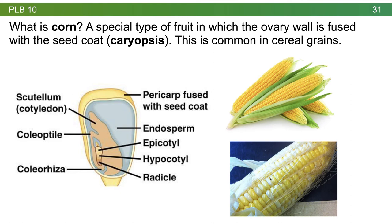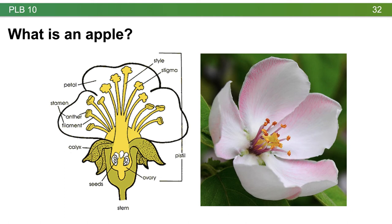Consider an apple: you have that hard skin on the outside, then fleshy fruit on the inside, and several seeds. You have a diagram of an apple flower and an actual picture of the apple flower. Notice where the seeds are in relation to the rest of the flower — think about what kind of fruit this could be of the different fruit types we've talked about.